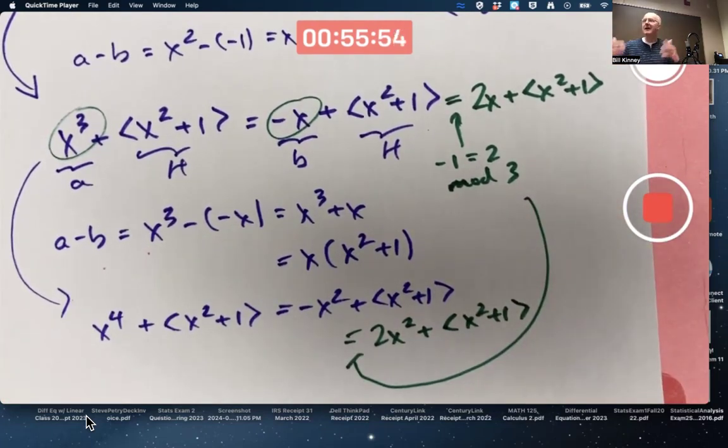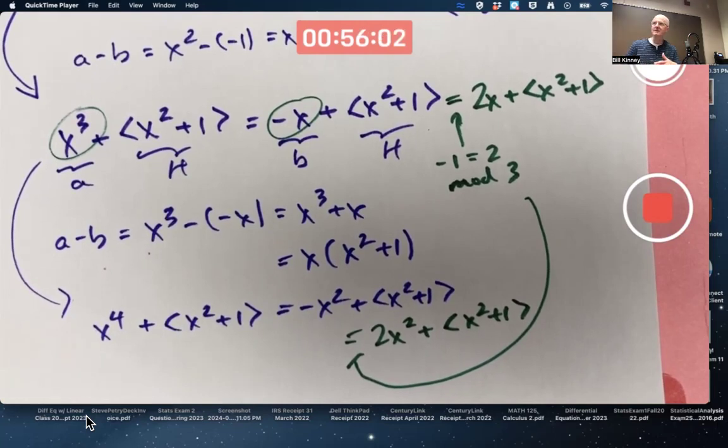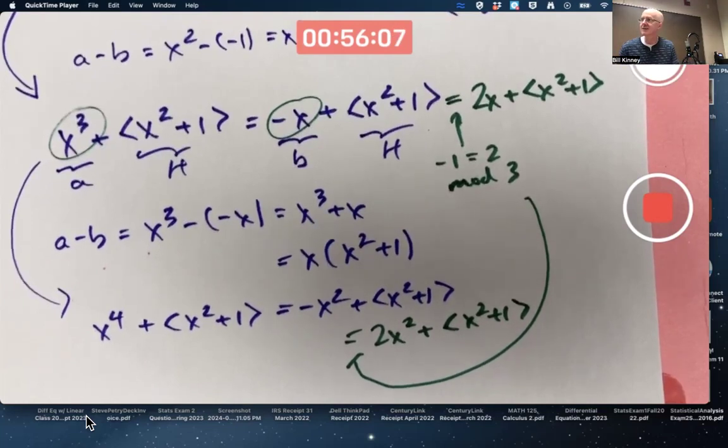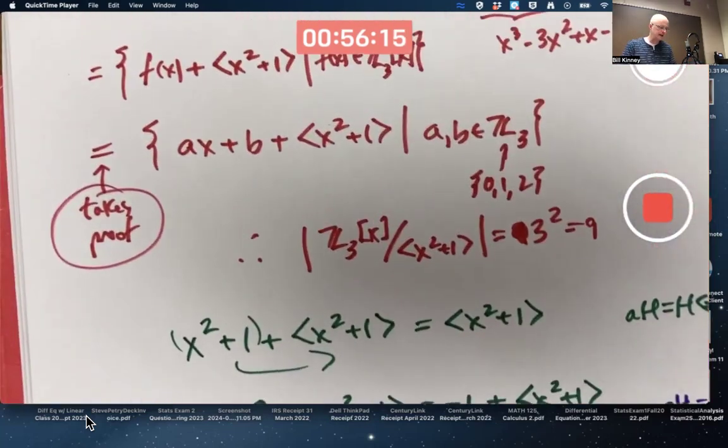This can be generalized to higher and higher powers of x or more complicated expressions. You know, maybe in front of the ideal, you have x to the fifth plus 2x to the fourth plus x cubed, et cetera, plus the ideal. You can always simplify it using these kinds of calculations. That's what the example is about. And that's ultimately related to being able to prove this.